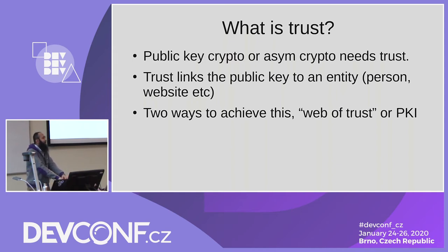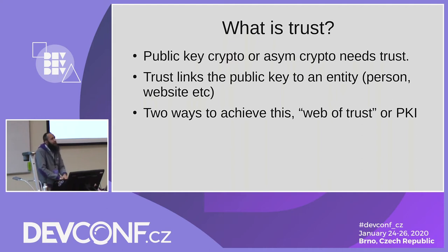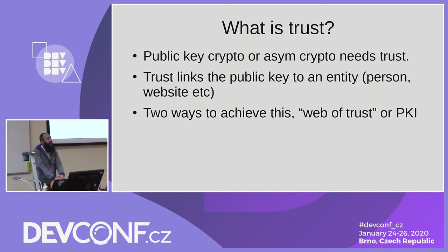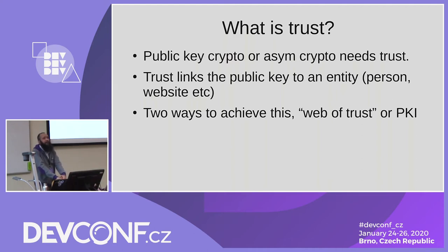Trust is very important in asymmetric cryptography. Without trust, man-in-the-middle attackers can get in between, hijack your connections, and read whatever data you are passing on the internet. There are basically two ways of achieving trust. One is by using something called the web of trust, used when you send a GPG encrypted email and need to verify the public key indeed belongs to the person you are emailing.